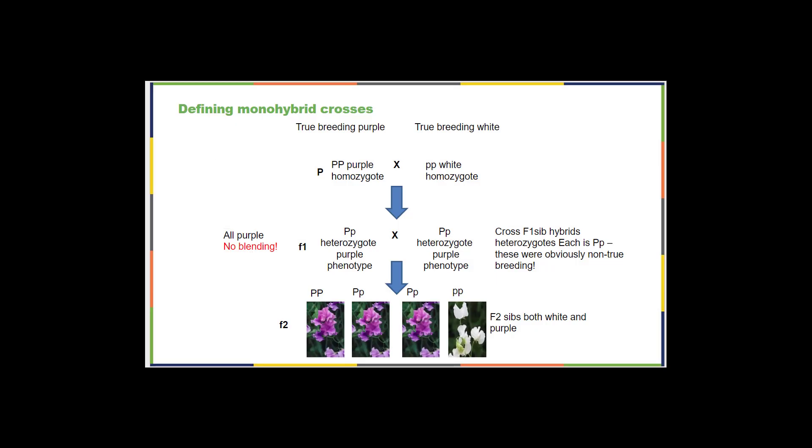All right, so let's keep talking about those crosses that Gregor Mendel did. Just a reminder, when we cross something, that means we're intentionally breeding two different parents in order to examine their offspring or maybe their grandbabies. Gregor Mendel could and often did perform monohybrid crosses. Mono means one. So in a monohybrid cross, you hybridize or mix two individuals that differ in one trait.